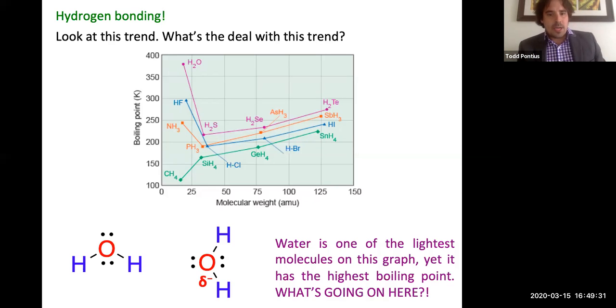So we've got a partial negative on that oxygen. We've got partial positives on these hydrogens. And whenever you have a hydrogen that's bonded to either a fluorine, an oxygen, or a nitrogen, it's such a pronounced difference in electronegativity that you end up getting a really notable partial negative and a really notable partial positive that create, in general, a pretty unifying bond here.